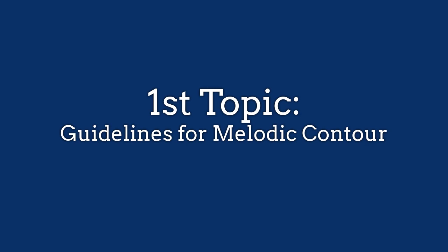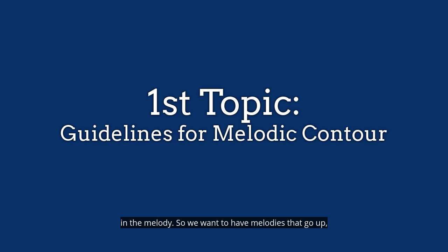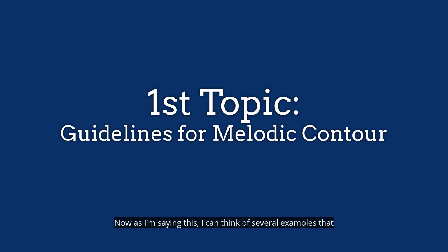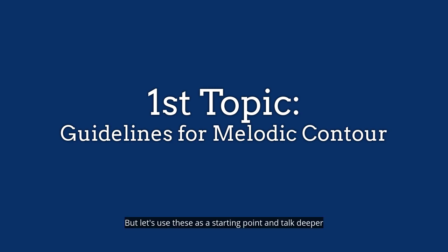How do we do that? One way is simply having direction changes in the melody — we want melodies that go up, as well as down, as well as some repeated notes. Another way is, generally speaking, we want a melody to have mostly steps. And when we do have large leaps, we want those leaps to be countered with a step in the opposite direction. I can think of several examples that break each of these guidelines, but let's use these as a starting point and talk deeper about each of them.